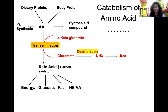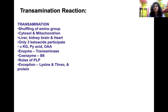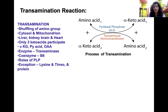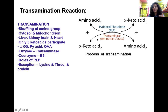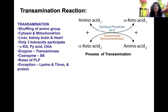Transamination is the transfer of an amino group from an amino acid to a keto acid to form a new amino acid and a new keto acid — it is simply a shuffling of the amino group. This reaction occurs in the cytosol and mitochondria of every cell, but occurs in greater quantity in the liver, kidney, brain, and heart. Only three keto acids can take part in transamination.